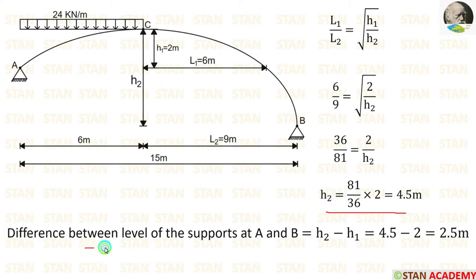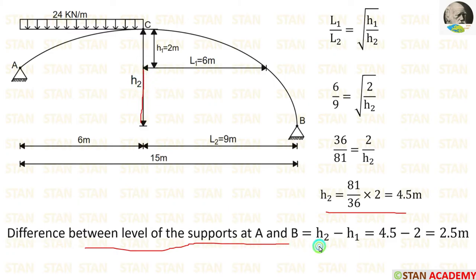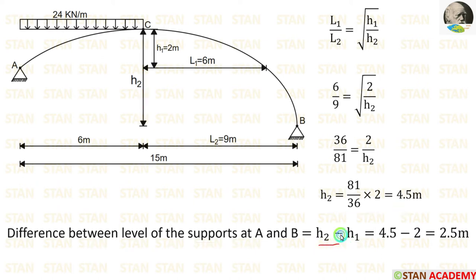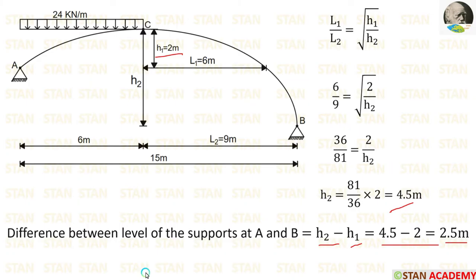Now we can calculate the difference between the levels of supports A and B. The difference is H2 minus H1: 4.5 minus 2, which gives us 2.5 meters.